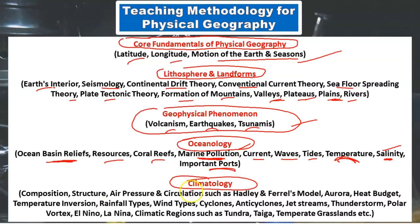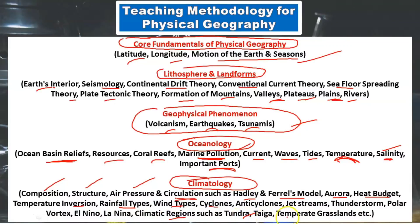Another very important topic is climatology. We will understand the composition and structure of our atmosphere, air pressure, air circulation, Hadley's and Farrell's models, aurora borealis, heat budget, types of rainfall, temperature inversion, various kinds of winds, cyclone, anti-cyclone, jet streams, thunderstorms, El Nino, La Nina, and the various climatic regions — Mediterranean type, tundra type, India type, China type, temperate grassland type, and tropical type. We will study everything here in this complete physical geography course.